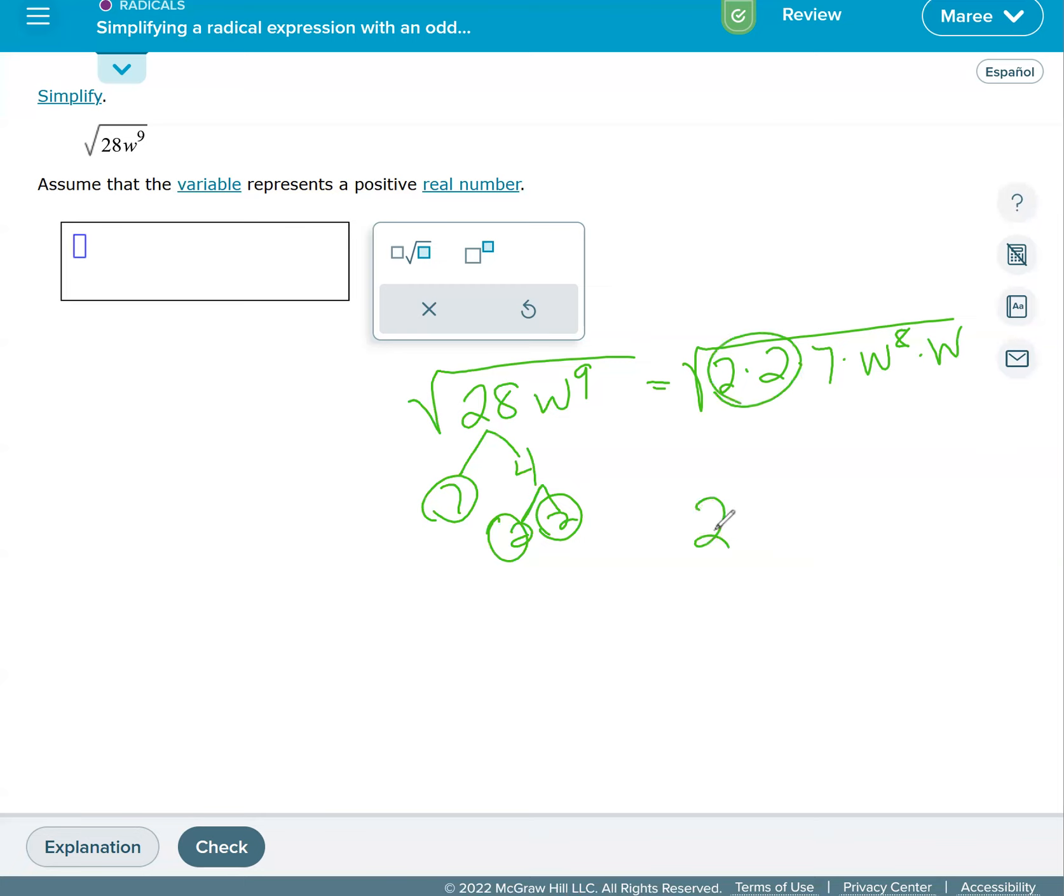So we have our double. So two comes outside, w to the eighth is even. So we're going to take half of eight to get a new exponent of four. And what's left inside is a seven and a w, which we just times together.